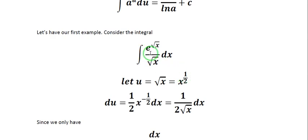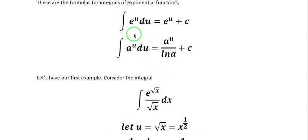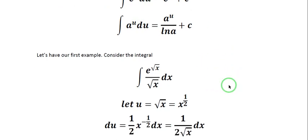For our first example, we have the integral of e to the square root of x all over the square root of x dx. Since we want to arrive at the integration formula e to the u du, we let u equal to the square root of x, because this is the exponent of e.